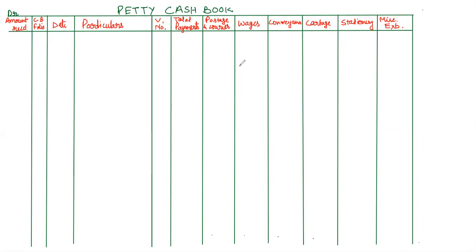Let's start with the question. On 2019 July 1, receive 10,000 from the cashier. When the petty cashier receives amount from the head cashier, that will be known as imprest money — so debit cash account. He is receiving 10,000 rupees for meeting all small expenses, and these small expenses are known as petty expenses, for which we have to prepare the petty cash book.